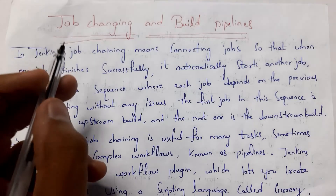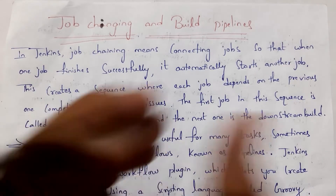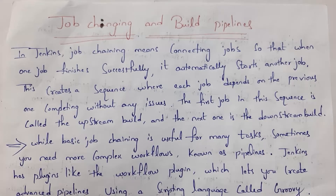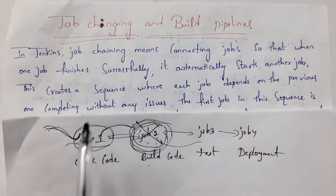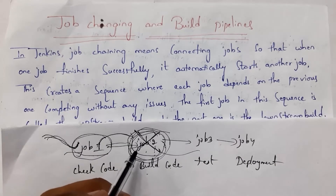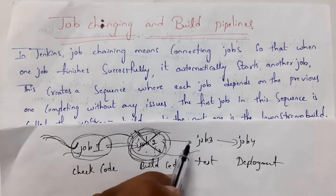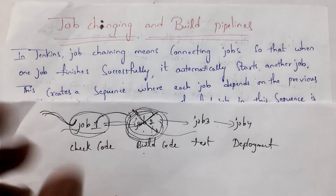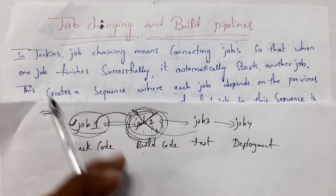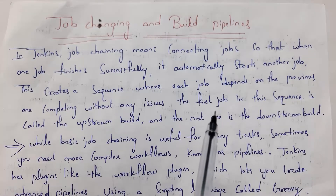The next topic is job chaining and build pipelines. In Jenkins, job chaining is nothing but connecting jobs so that whenever one job finishes successfully, it will automatically start the next job. So one job depends on another job — job two depends on job one, job three depends on job two, job four depends on job three. If job two is unsuccessful, then it will not go to job three. The first job in the sequence is called the upstream build and the next one is called the downstream build.